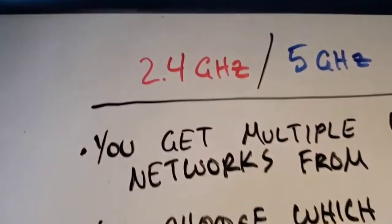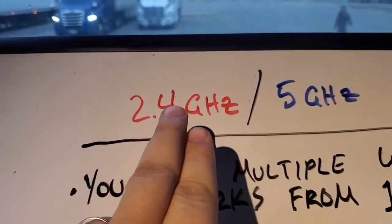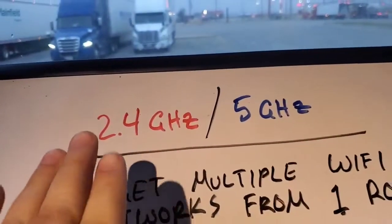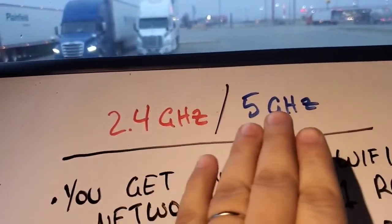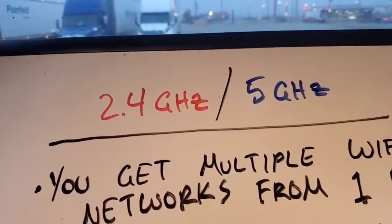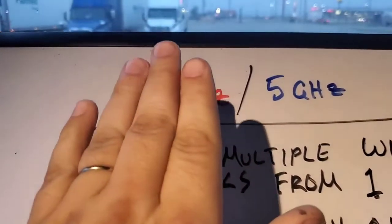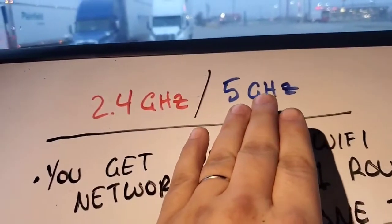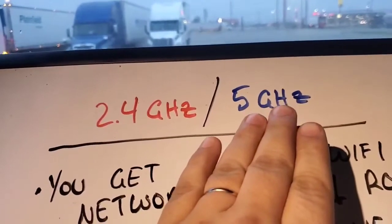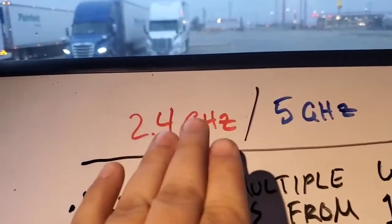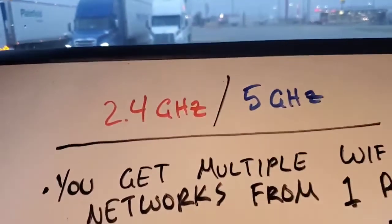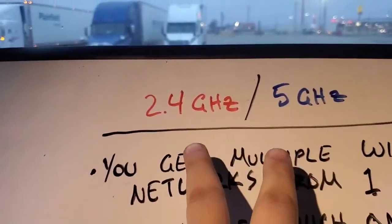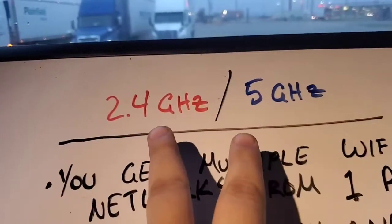Routers that only support one frequency are called single-band routers. Routers that have both bands but require you to switch between them are called dual-band routers. Routers that broadcast both 2.4 gigahertz and 5 gigahertz simultaneously are called simultaneous dual-band routers, because they have two networks active at the same time.